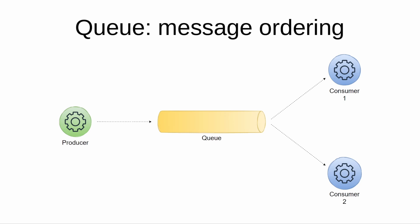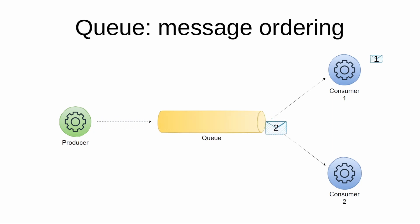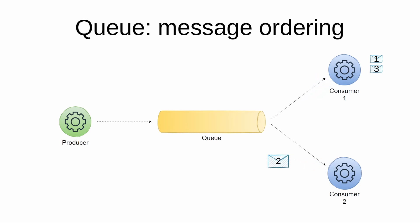Now let's compare message ordering. Traditional message queues allow multiple consumers to retrieve messages from a queue, however there is no guarantee that messages will be processed in the same order in which they were added. A consumer may fail to process a message, causing it to be processed by another consumer out of order. As a result, messages are processed not in the same order in which they were added into the queue.